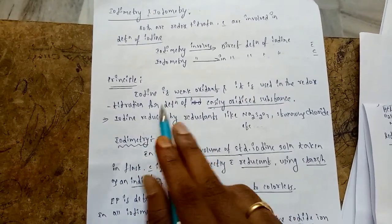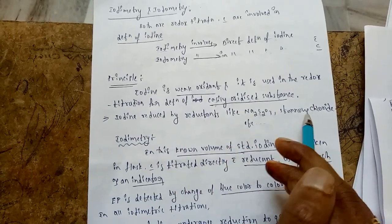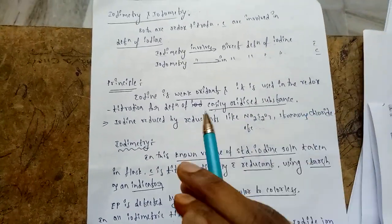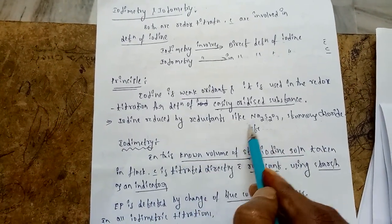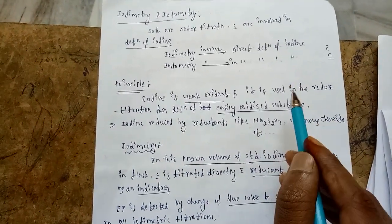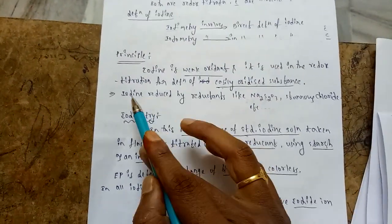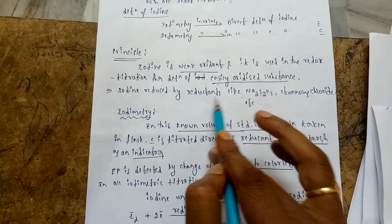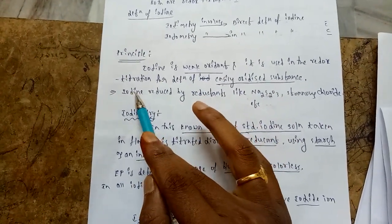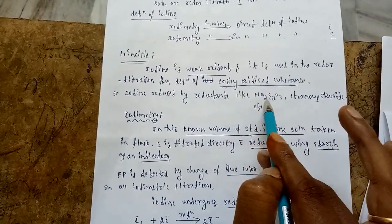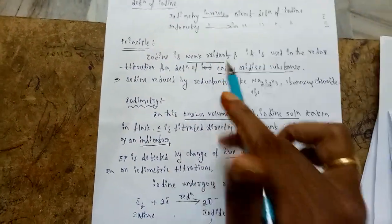Iodine is reduced by reductants like sodium thiosulfate, stannous chloride, and antimony trioxide — all are examples of reductants. Whenever iodine reacts with these reductants, this iodine undergoes reduction, while the reductants like Na₂S₂O₃ and stannous chloride undergo oxidation.